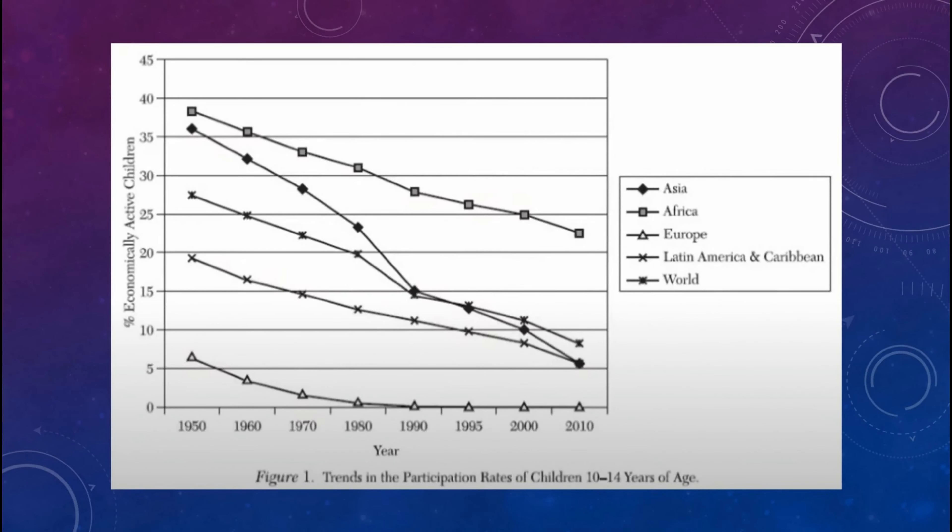Looking at the graph: child labor has been decreasing over the last 10 years. Africa has the highest number of child labor in the world, while Europe has the minimum. Asia's graph is also clearly decreasing, and the world graph is decreasing since 1952 to 2010. There has been a decrease of 71.5 million — a 38% reduction — in the number of child laborers over the past 10 years.